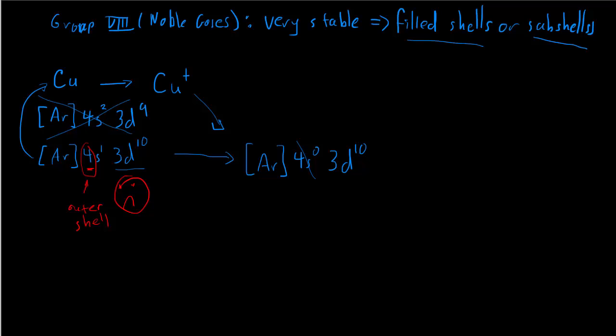So that's how we do electron configurations for ions. We simply add or remove electrons always from the outer shell.